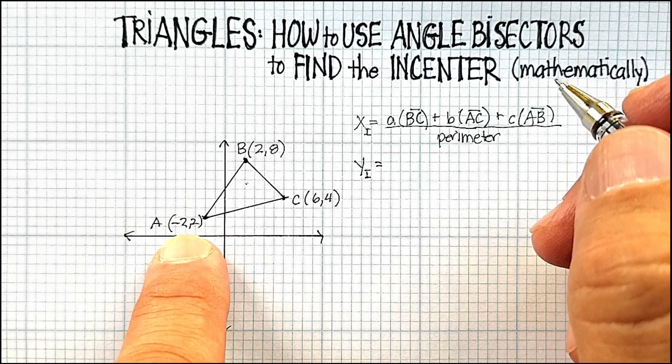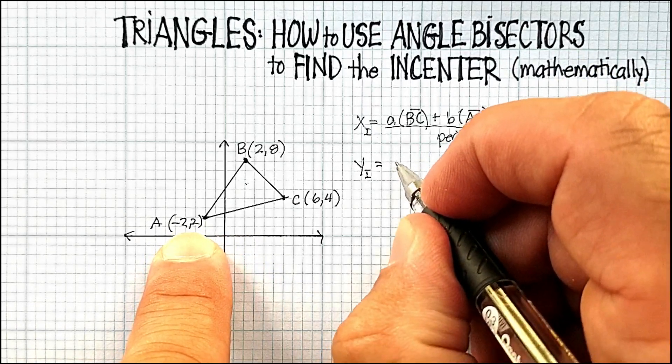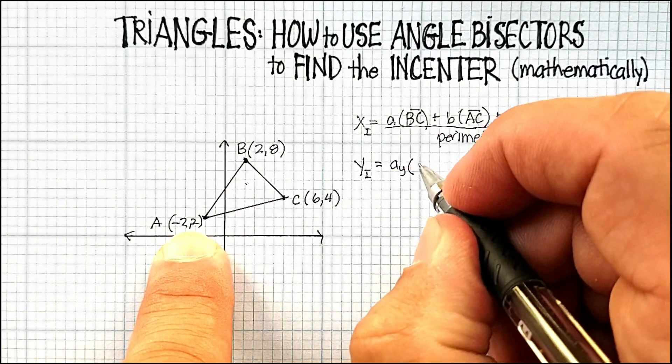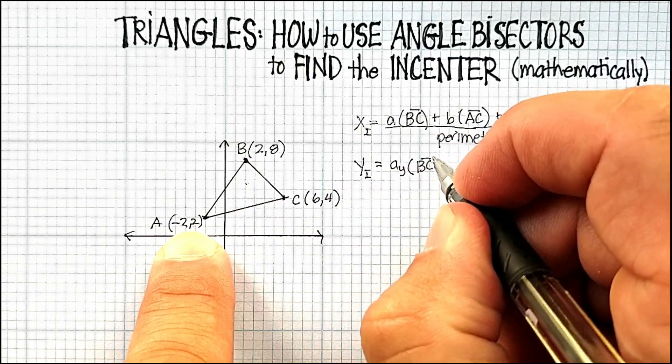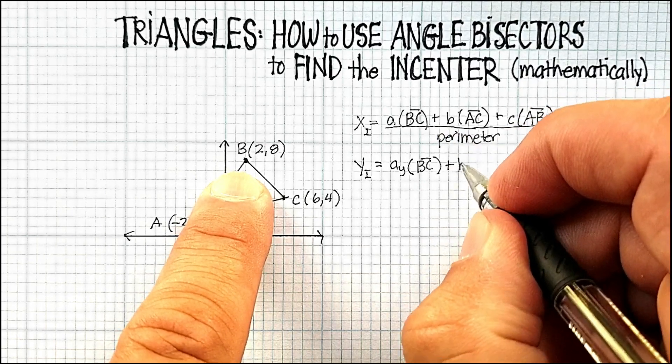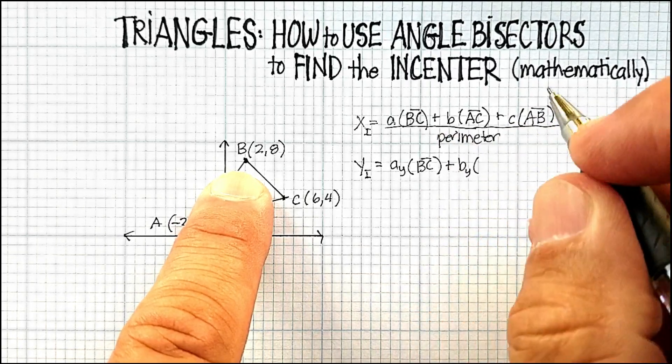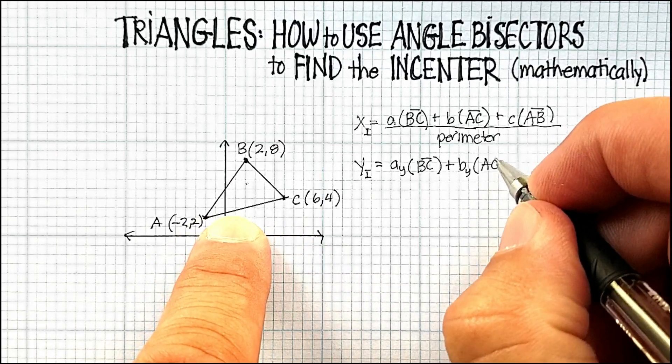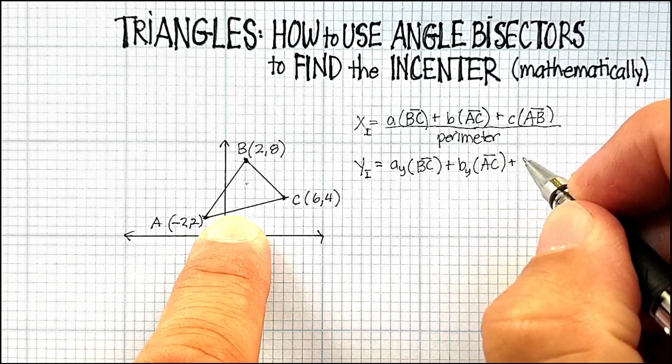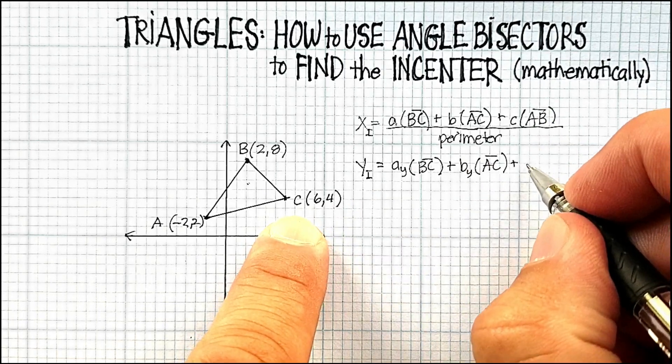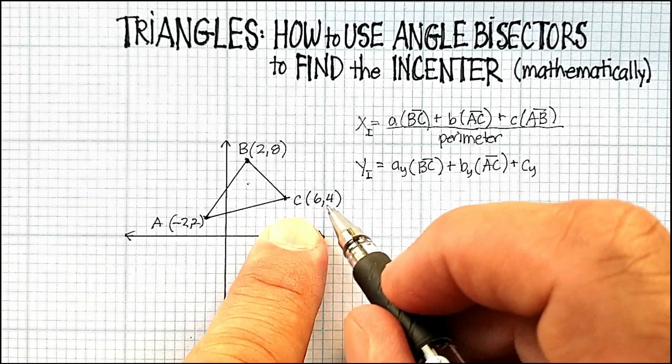So we'll go a_y times, again, the opposite side BC, plus b_y times, in this case, AC line segment, plus c, the y value of c, times the opposite side, which is AB.